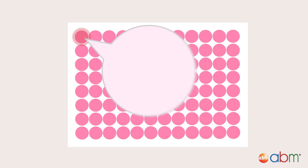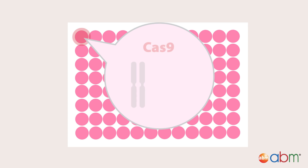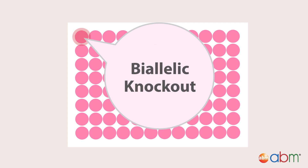CRISPR knockout is typically achieved by the introduction of insertions or deletions, otherwise known as indels, within the desired gene. As most mammalian cells are diploid, a complete gene knockout occurs when both gene alleles carry an indel. In other words, you're looking for a biallelic knockout.